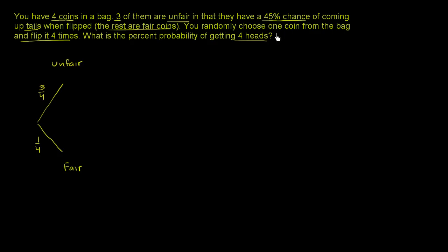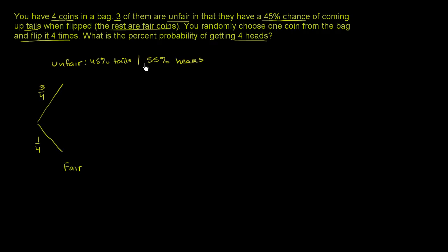Let's remind ourselves. An unfair coin has a 45% chance of coming up tails. So this means I have a 45% chance of tails, which also means — and we have to be careful here because they're asking about heads — if I have a 45% chance of getting tails, that means I have a 55% chance of getting heads. 100 minus 45 is 55 for heads. For the fair coin, I have a 50% chance of tails and a 50% chance of heads.